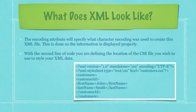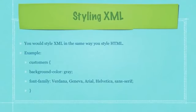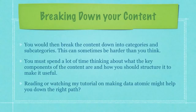With the second line of code, you're defining the location of the CSS file you wish to use to style your XML data. You would style XML in the same way you style HTML with a cascading style sheet declaration, as you can see here. You would then break the content down into categories and subcategories. This can sometimes be harder than you think. You must spend a lot of time thinking about what the key components of the content are and how you should structure it to make it useful. Reading or watching my tutorial on making data atomic might help you down the right path. I've included a link here to that.